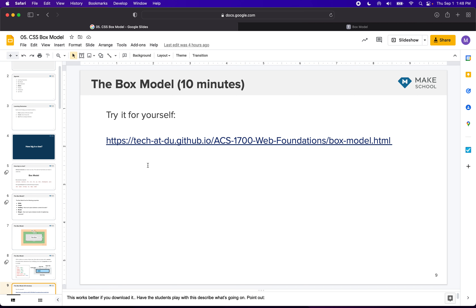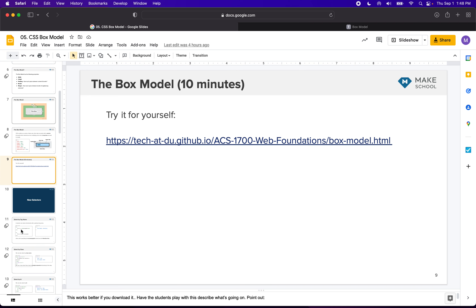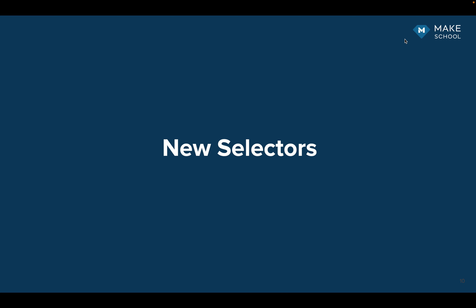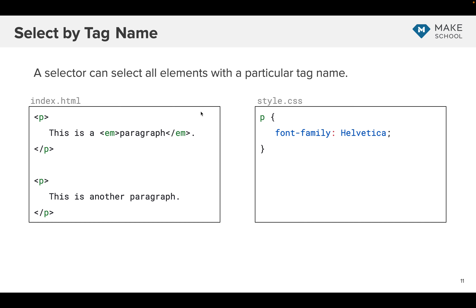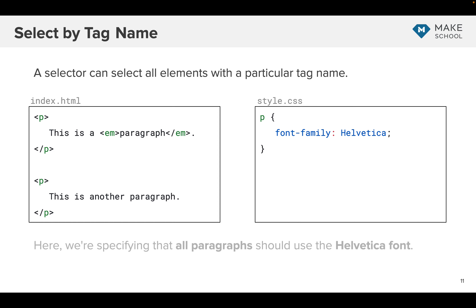Let's review selectors for a minute, because we'll need these for the next section. Let's review the old selectors and then talk about some new ones. In the previous class we talked about the type selector, or tag selector. If you use the name P just by itself, it will select both paragraph tags. So both paragraph tags will now have font-family of Helvetica. That's called the type selector or tag selector.